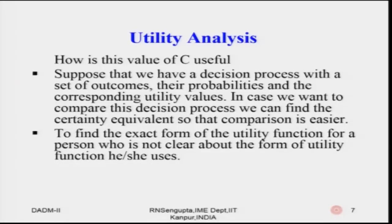The question is: how is the value of C useful? Suppose we have a decision process where the outcomes, probabilities, and utility values are known. If we want to compare this decision process with others, we can find the certainty equivalent to make comparison easy. Given C, we can compare decisions and identify the best, second best, and so on.